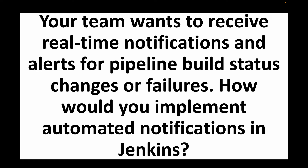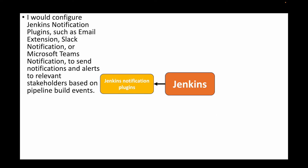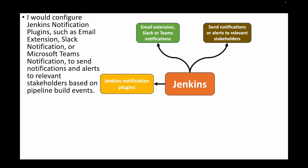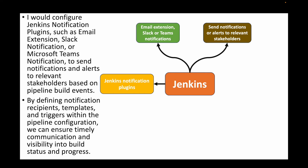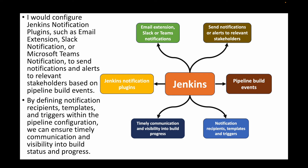The next question: your team wants to receive real-time notifications and alerts for pipeline build status changes or failures — how would you implement automated notifications in Jenkins? Use Jenkins notification plugins such as email extension, Slack notifications, or Microsoft Teams notifications to send alerts to relevant stakeholders based on pipeline build events. Define notification recipients, templates, and triggers within the pipeline configuration to ensure timely communication and visibility into the build status and progress.